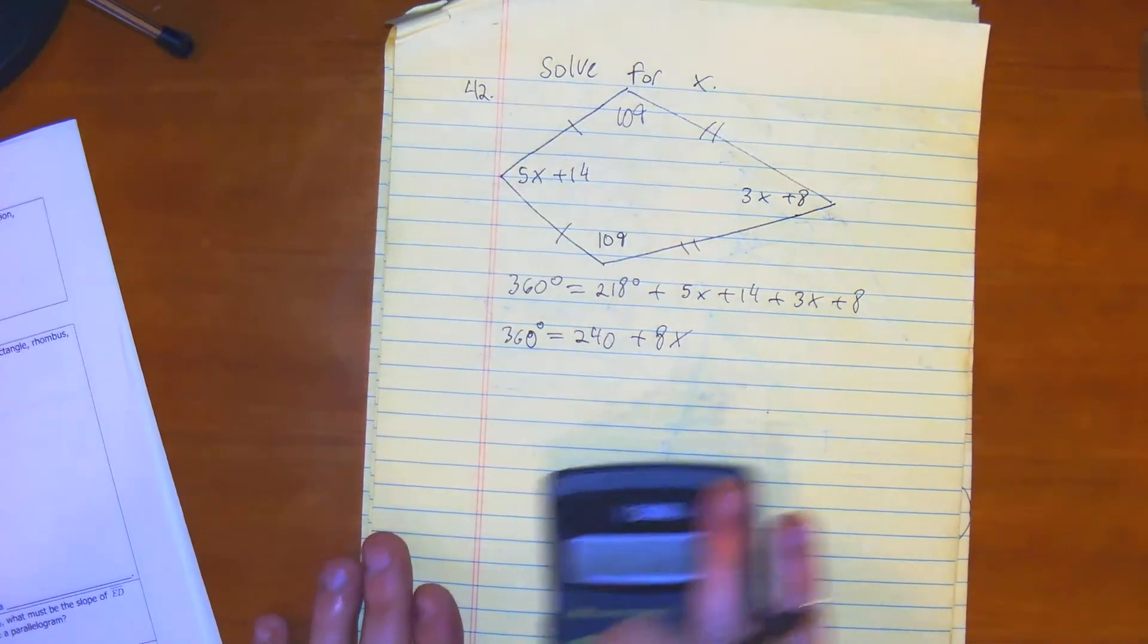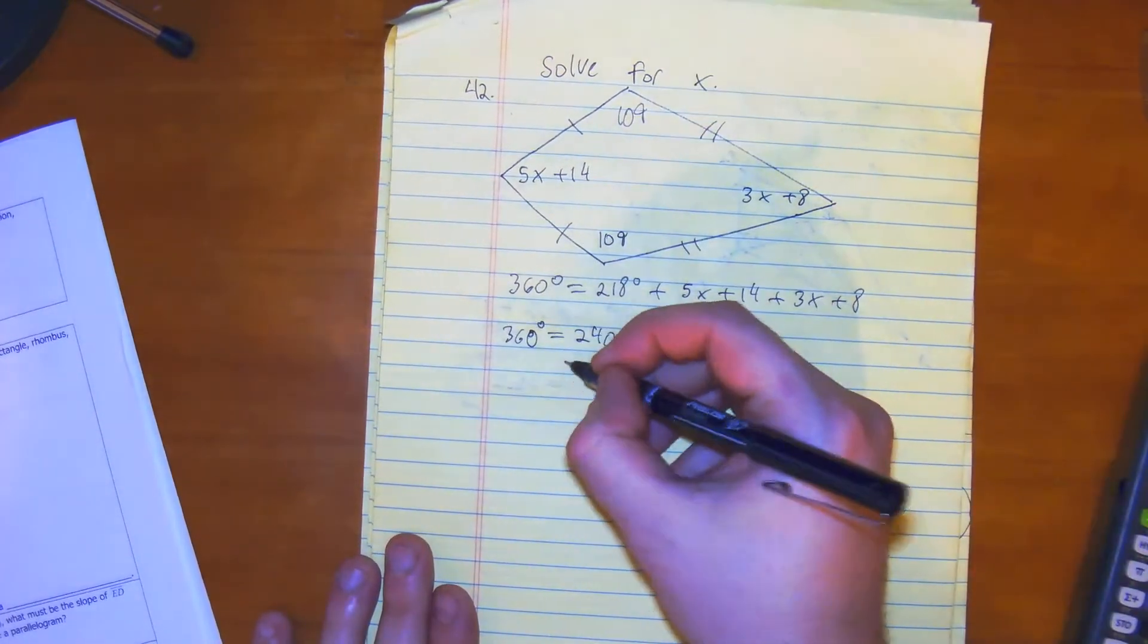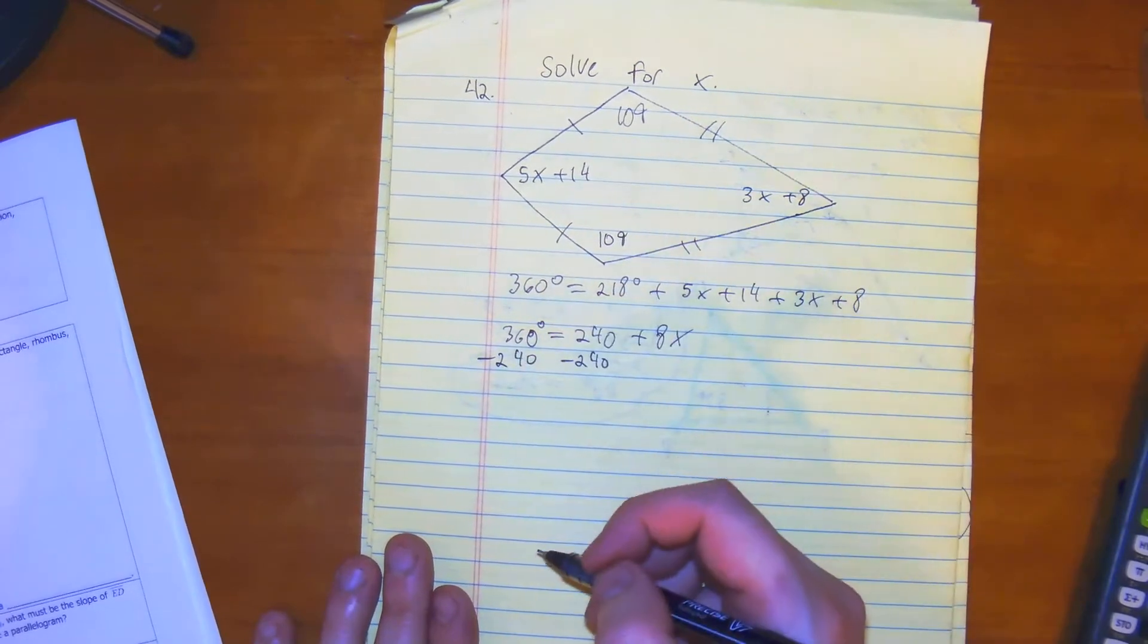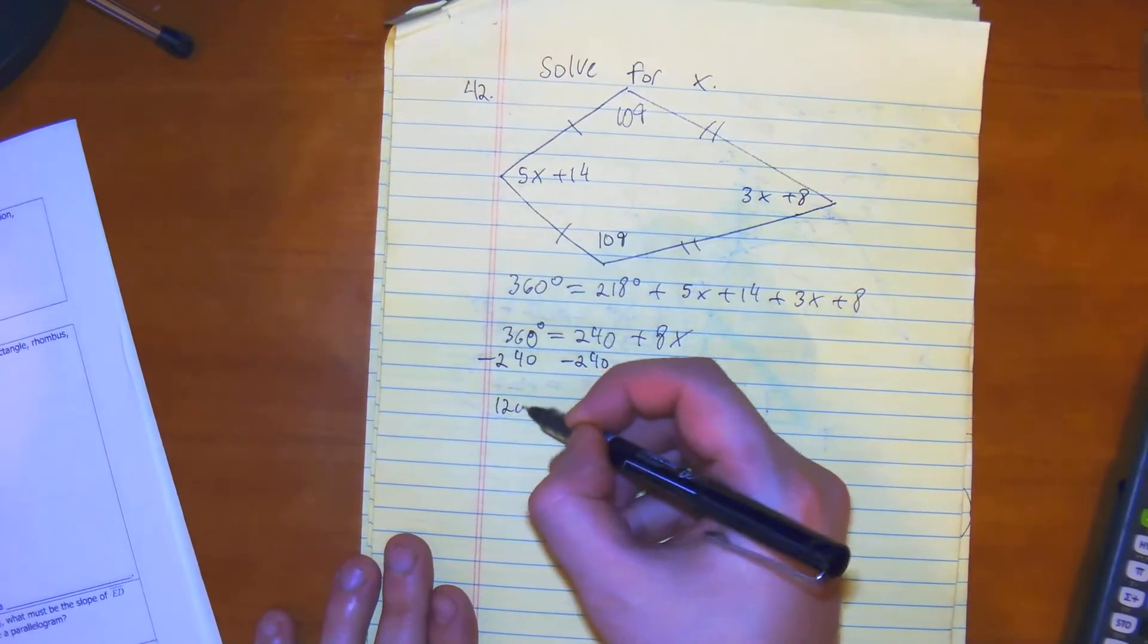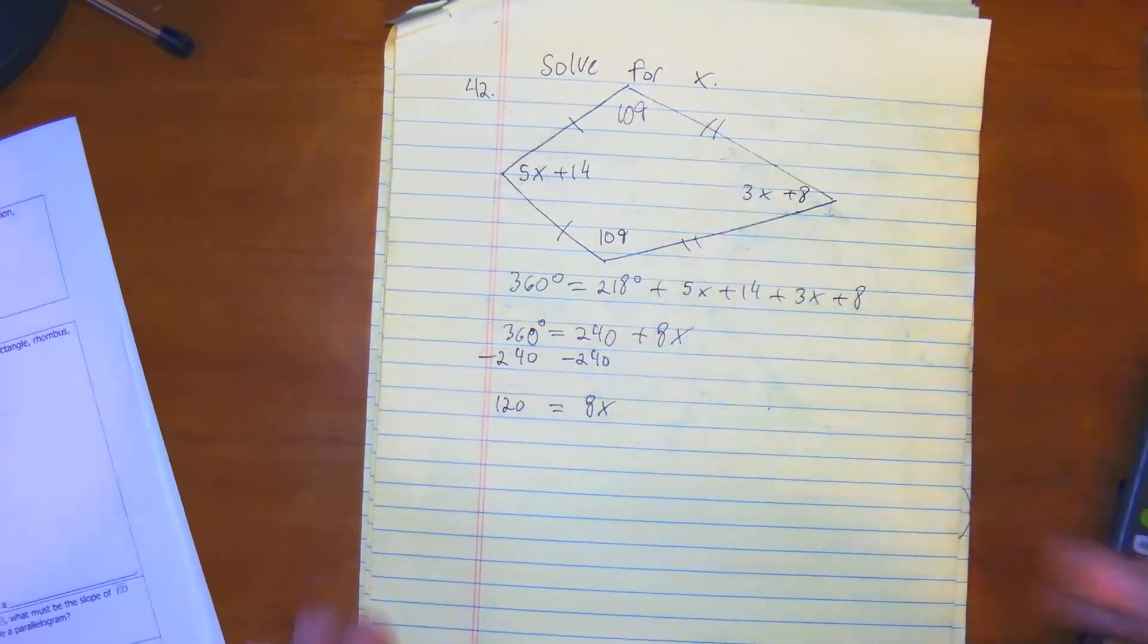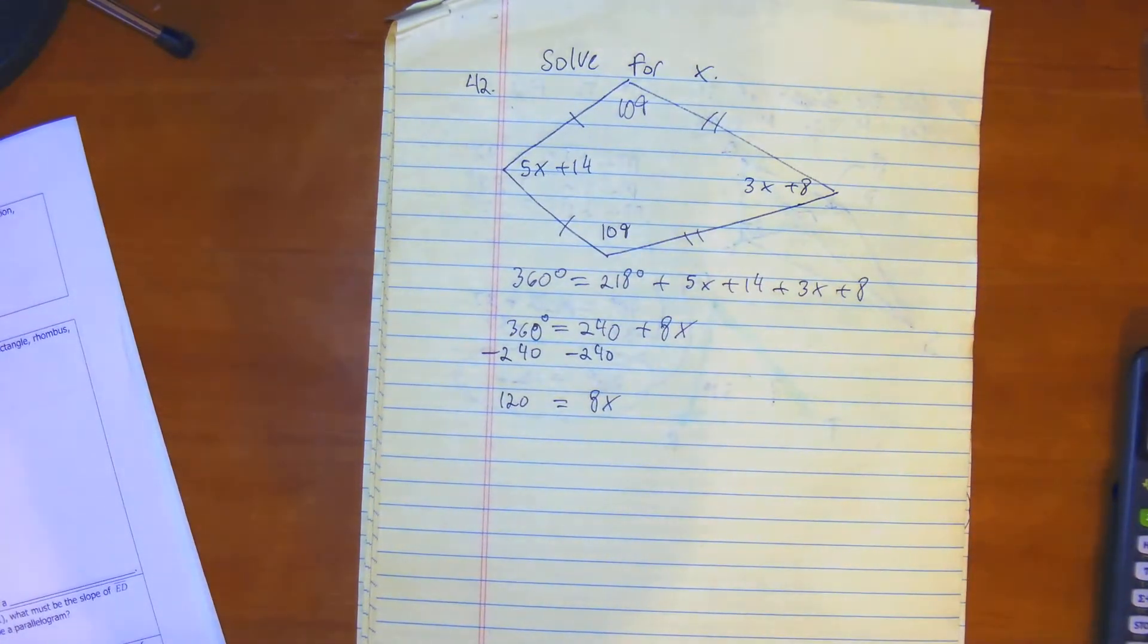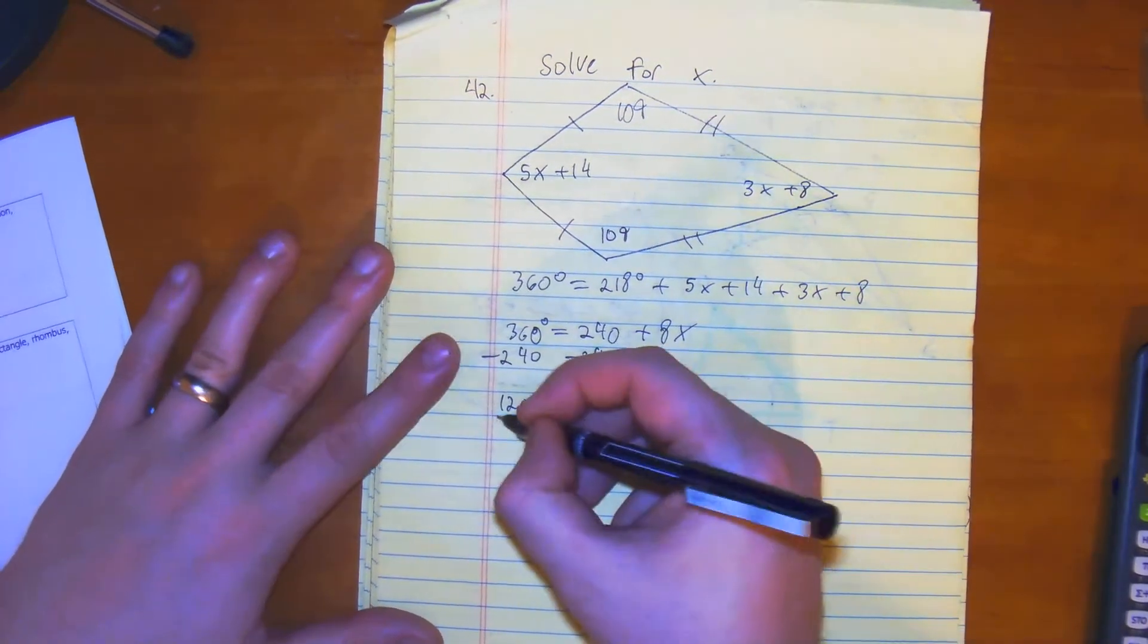So what we have here is we just need to subtract 240 from both sides. You get 120 is equal to 8x. And 120 divided by 8, we divide by 8, we get 15.